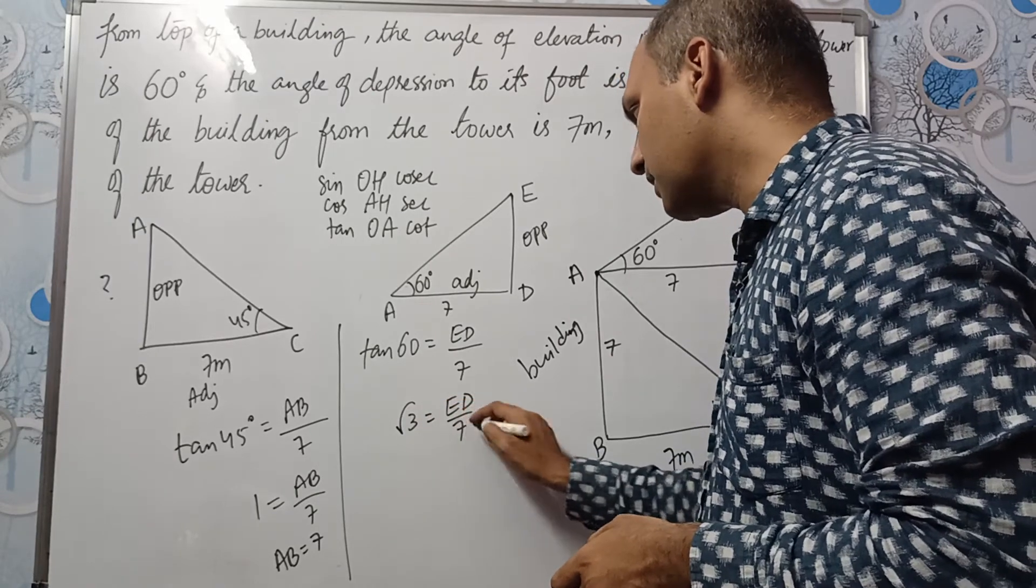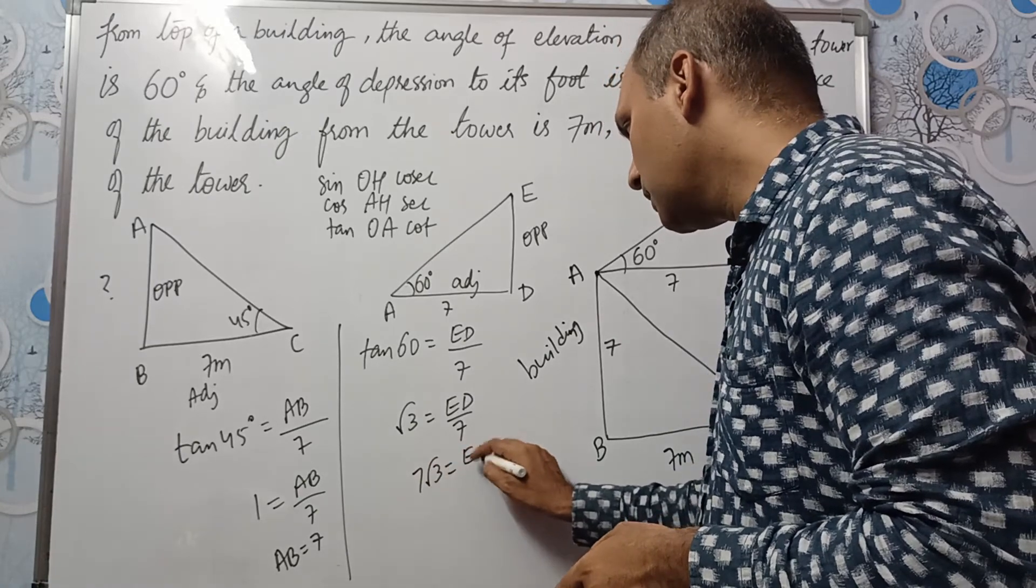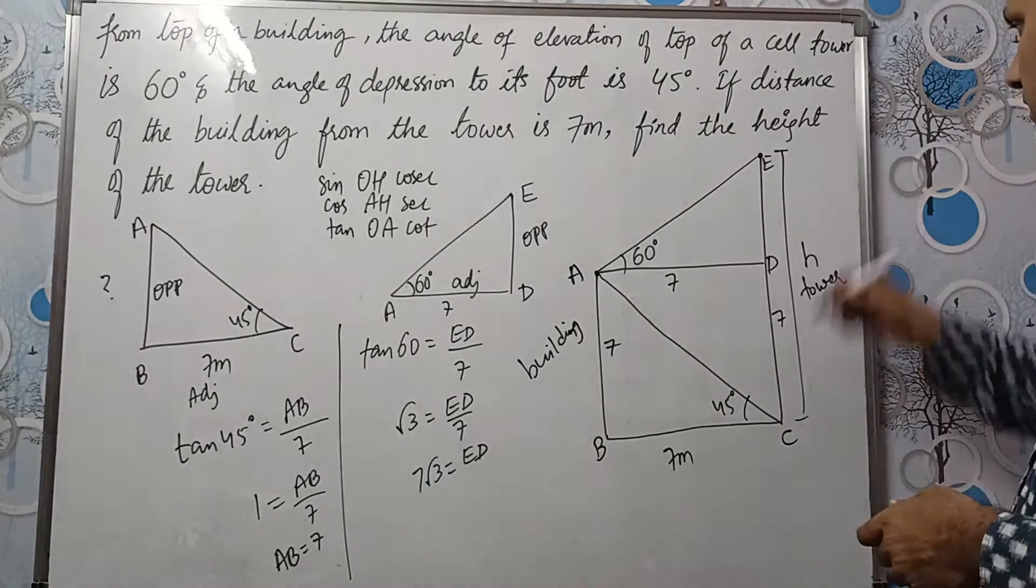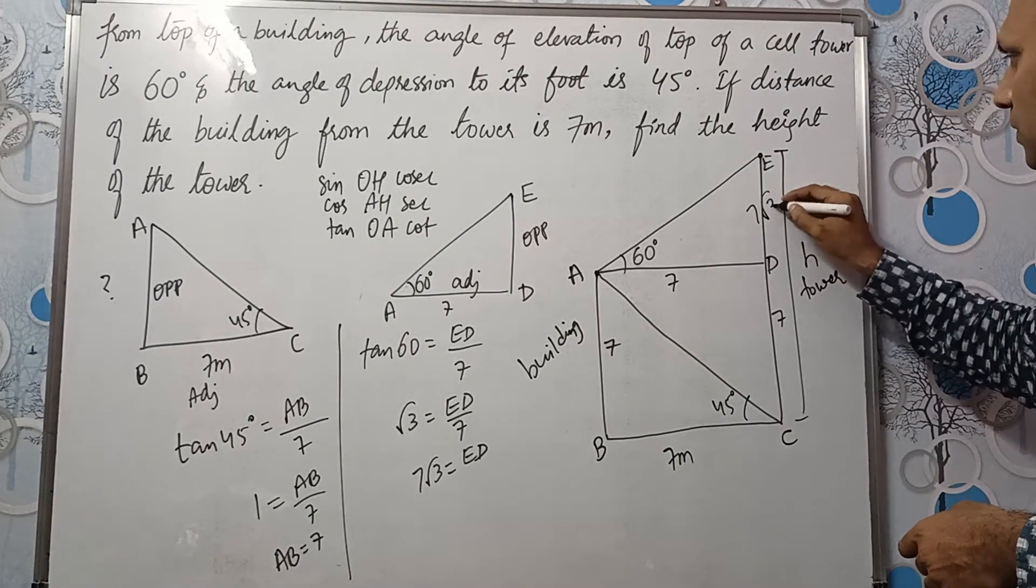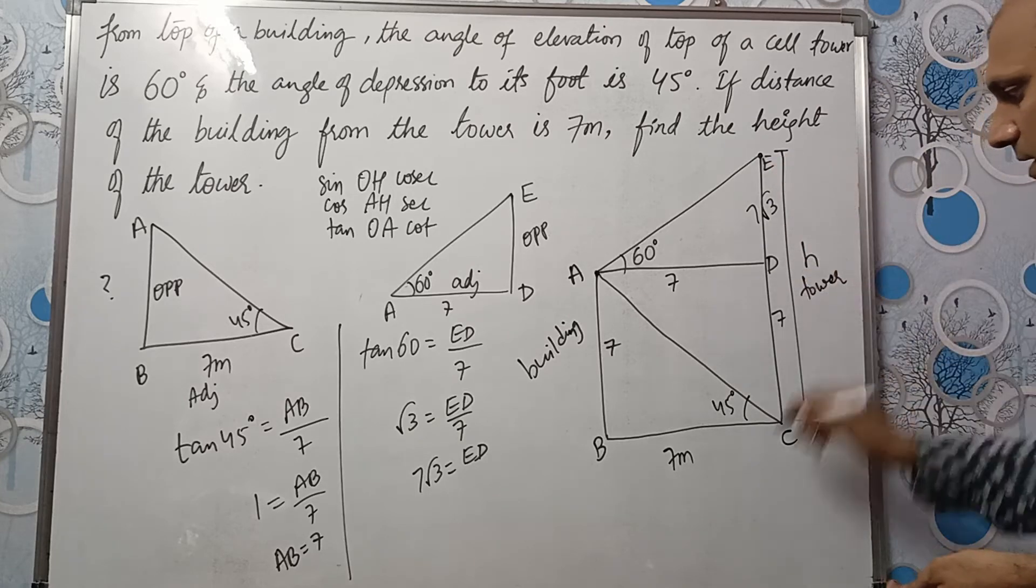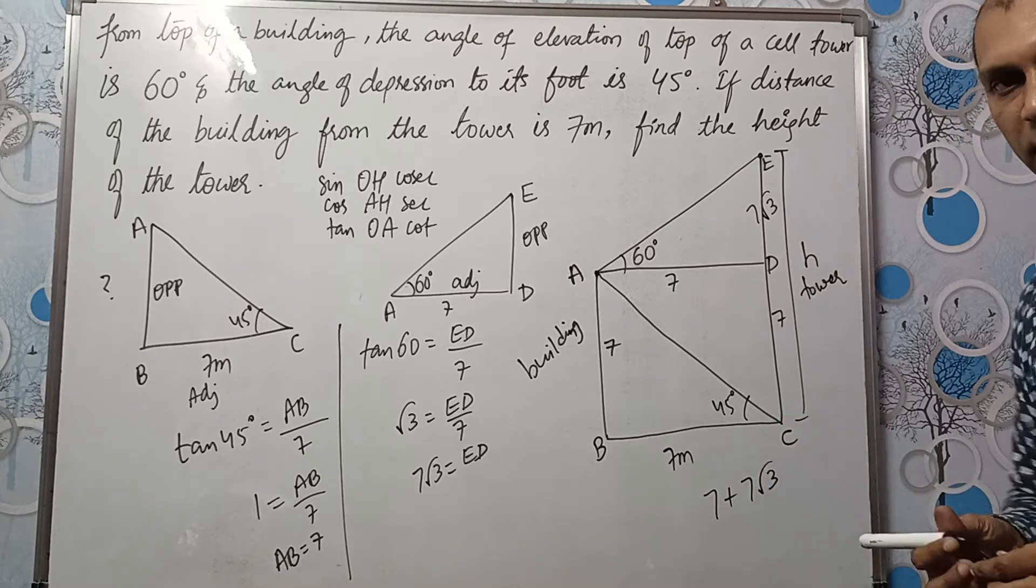This is ED divided by 7. If you cross multiply this, 7 root 3 will be equal to ED. So how much is this now? This is 7 root 3. Now what is the height of the tower? 7 root 3 plus 7. It is 7 plus 7 root 3 or 7 root 3 plus 7.